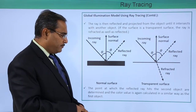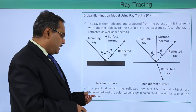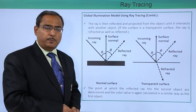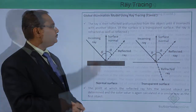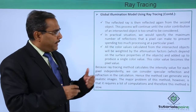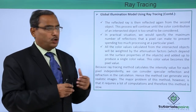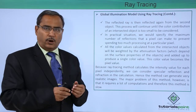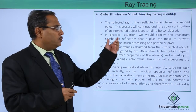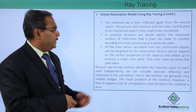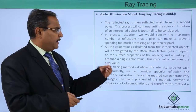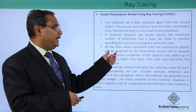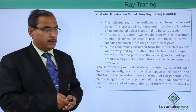The point at which the reflected ray hits the second object is determined and the color value is again calculated in a similar way as for the first object. The reflected ray is then reflected again from the second object, and this process continues until the color contribution of an intersected object is too small to be considered. In practical situations, we specify a maximum number of reflections that a pixel can make to prevent excessive processing.